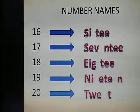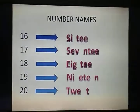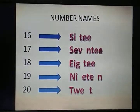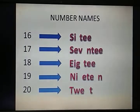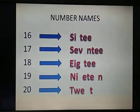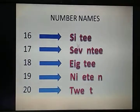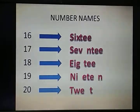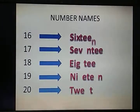Look at this. What is the spelling of 16? Which letter is missing in the spelling of 16? S, I — very good — X. X is missing. S, I, X, T, double E, N. Very good. N is also missing.